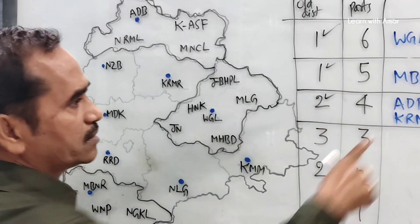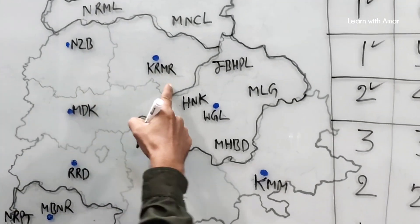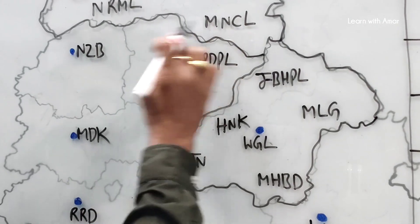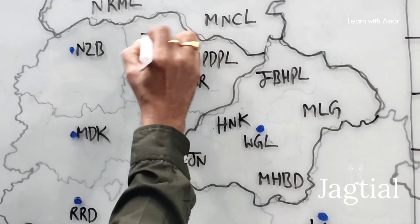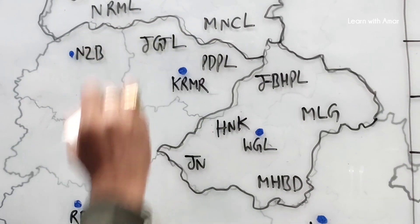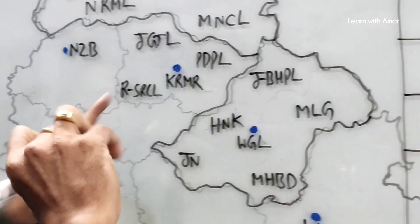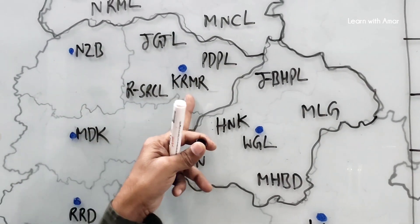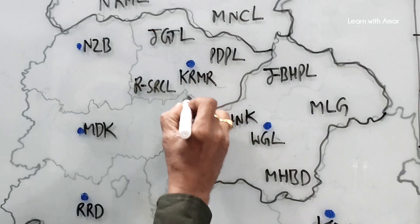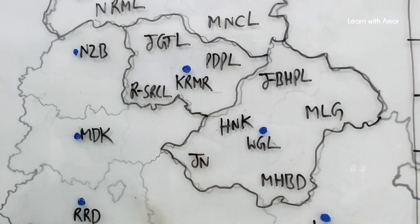Coming to Karimnagar, we also find four parts: the original Karimnagar district, then going one way we get Peddapalli, going another way we get Jagithyal, and then Rajanna Sircilla. So Karimnagar district became four parts: Karimnagar, Peddapalli, Jagithyal, and Rajanna Sircilla. The border and location of each and every district is perfectly 100% correct.